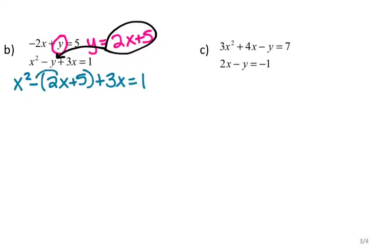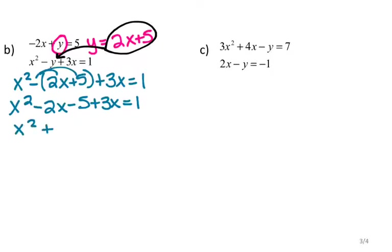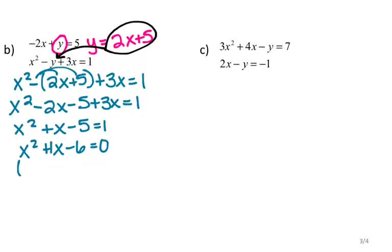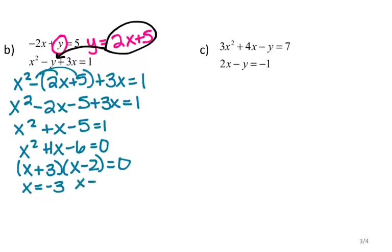I'll distribute the negative into the parentheses: x squared minus 2x minus 5 plus 3x equals 1. Combining like terms gives x squared plus x minus 5 equals 1. Since there's an x squared, this is a quadratic function, which we solve by factoring or the quadratic formula. I'll factor — first getting it equal to 0 by subtracting 1 from both sides: x squared plus x minus 6 equals 0. Two numbers that multiply to negative 6 and add to 1 are positive 3 and negative 2, giving x plus 3 times x minus 2 equals 0. So x equals negative 3 and x equals positive 2.